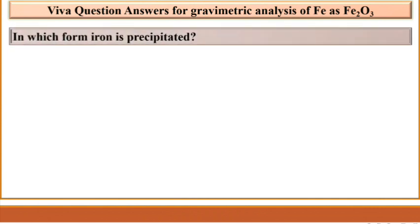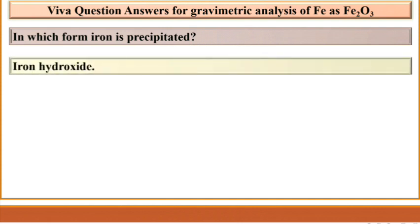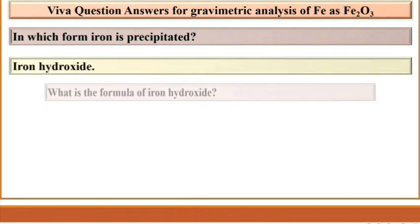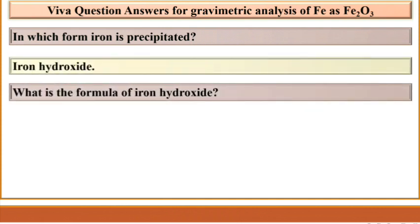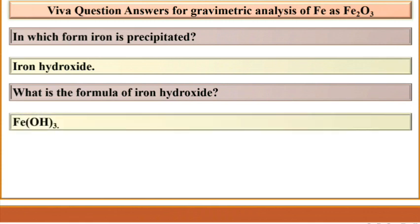In which form is iron precipitated? Iron is precipitated as iron hydroxide. What is the formula of iron hydroxide? It is Fe(OH)₃.